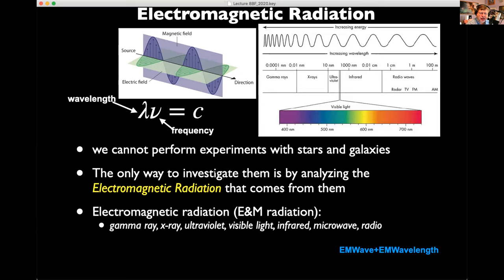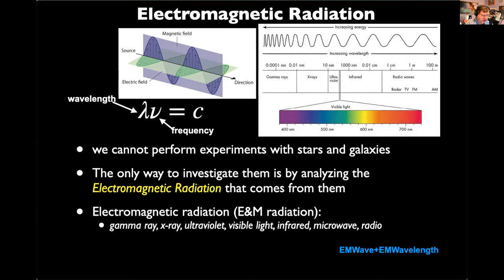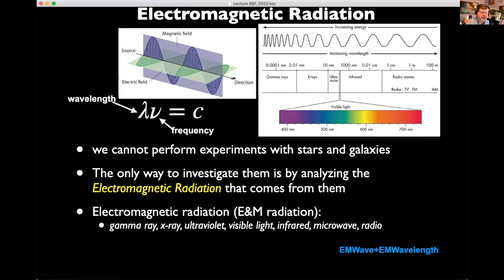Electromagnetic radiation comes with a whole series of wavelengths and frequencies. As the wavelength gets shorter, the frequency goes up, because wavelength times frequency must equal the speed of light — a constant. Radio waves have a wavelength of about a meter and a very low frequency. Gamma rays have a wavelength of 0.0001 nanometers (10⁻¹² meters) and a very high frequency.